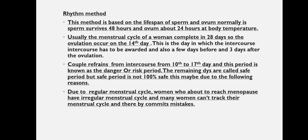Due to irregular menstrual cycles — women who are about to reach menopause tend to have irregular cycles — and in many cases women can't accurately track their menstrual cycle, these are the chances for failure of the rhythm method. That's all. Thank you.